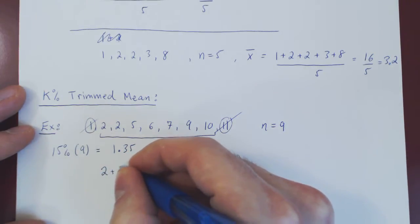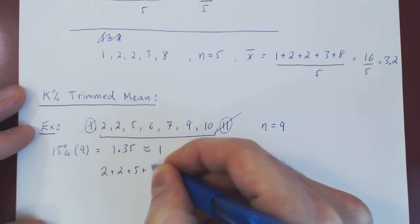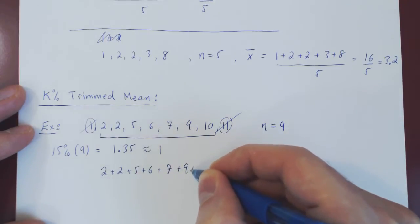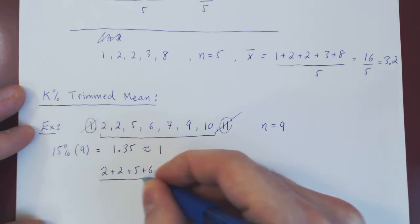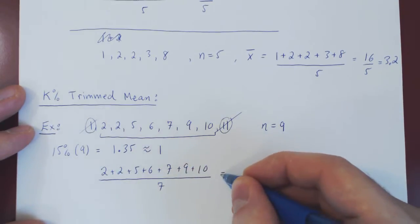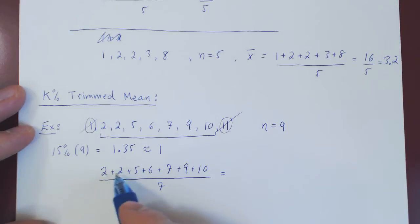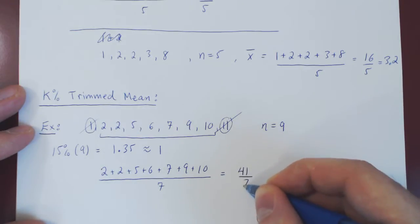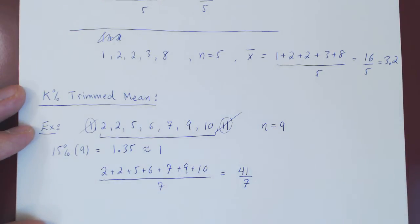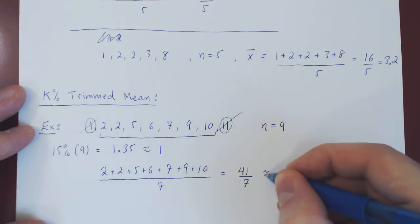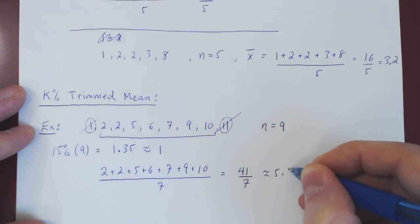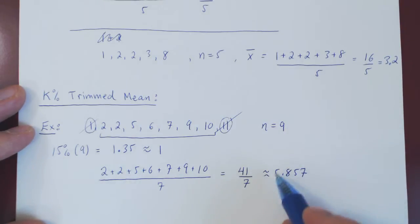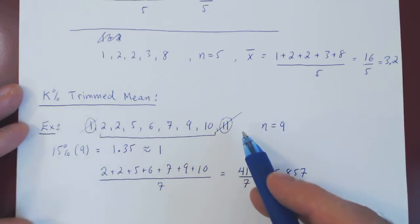The average of this remaining set will be the 15% trimmed mean of the original data set. If we compute this, 2 plus 2 plus 5 plus 6 plus 7 plus 9 plus 10 over 7, that's 41 over 7, and 41 divided by 7 is approximately 5.857. And that is the 15% trimmed mean of the original data set.